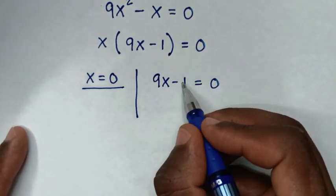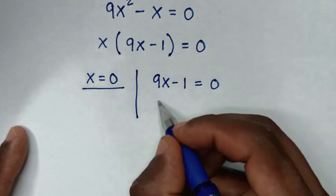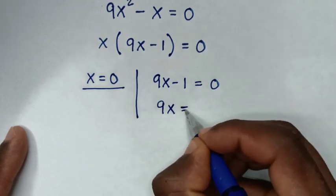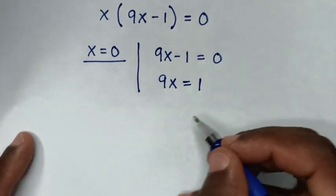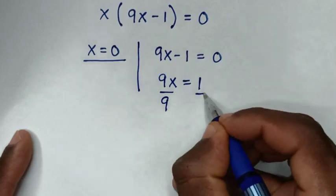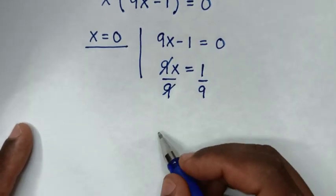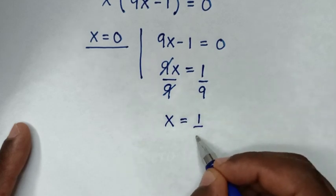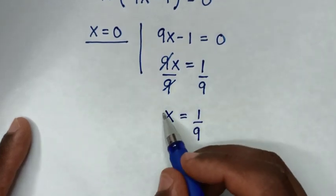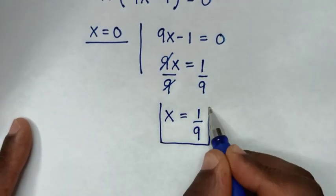Then into here, we take this negative 1 into the right side. So it will be 9 x is equal to 1. Then we divide by 9 in this side and in this side. So this 9 and this 9 will cancel, then it will be x is equal to 1 over 9. So this is the other value of x.